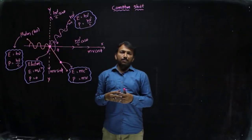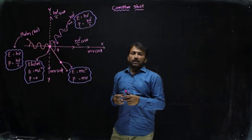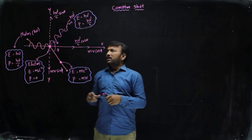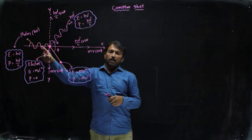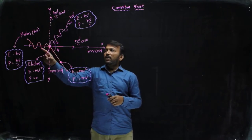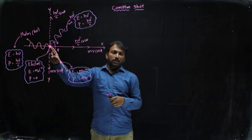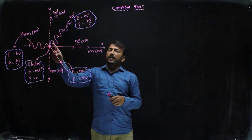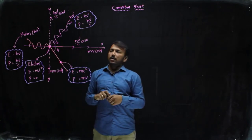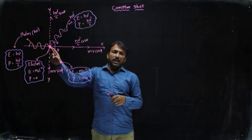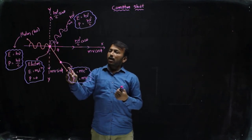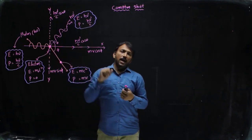Now we will derive the expression for the Compton shift. In the diagram, a photon is incident on an electron which is at rest. When the photon is incident on the electron, the photon gets scattered at an angle theta in the X direction. Similarly, the electron which is at rest absorbs some energy from the photon and recoils at an angle phi with the X direction.